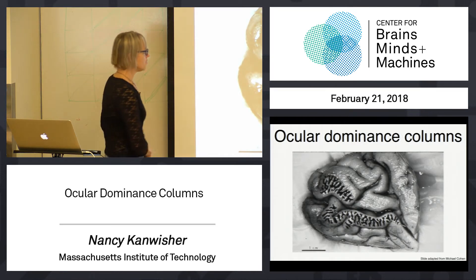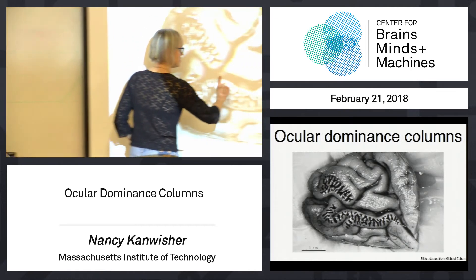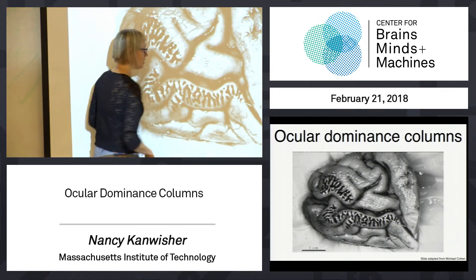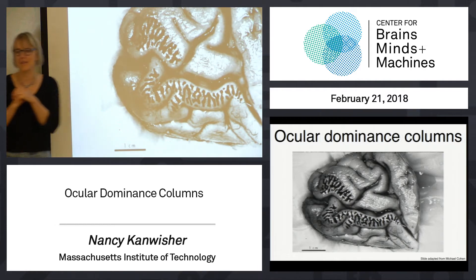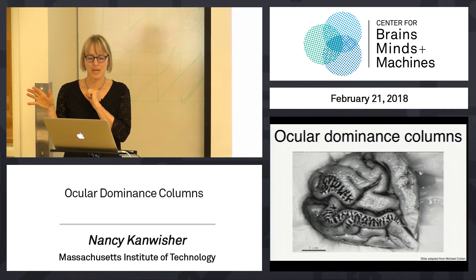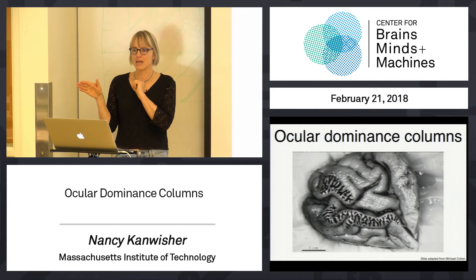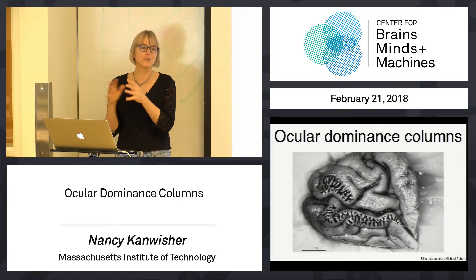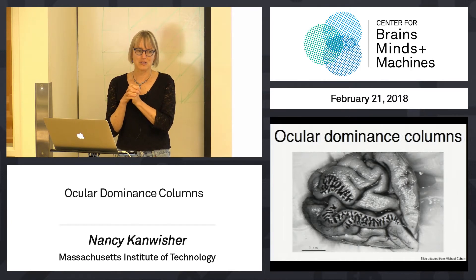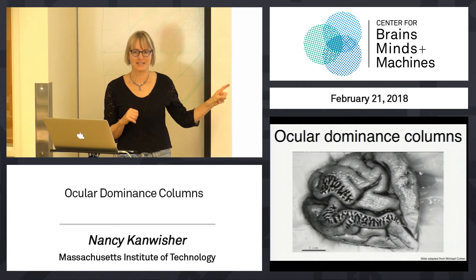This is an amazing study where this was shown actually in a post-mortem human brain. This is the calcarine sulcus of a person, looking on the inside. What happened was this person lost an eye shortly before death. This person, I believe, had some kind of terminal cancer and agreed to brain donation after death. That person's brain was collected after they died.